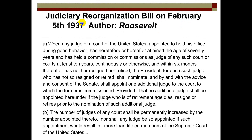Here is Roosevelt's response — an excerpt from the Judiciary Reform Bill: When any judge of a court of the United States appointed to hold office during good behavior has attained the age of 70 years and has held a commission as judge for at least 10 years, continuously or otherwise, and within the six months thereafter has neither resigned nor retired, the president shall nominate and, with advice and consent of the Senate, appoint one additional judge to that court.